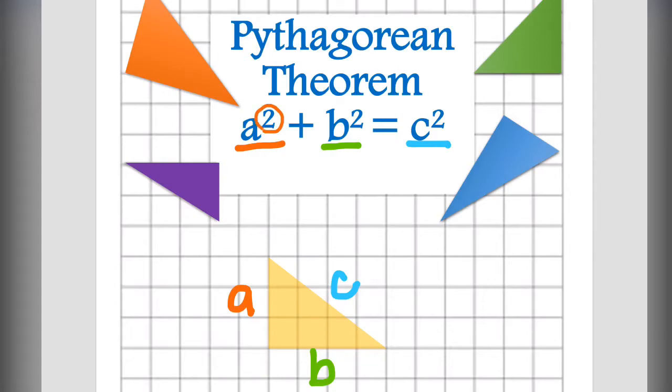Now, when we actually look at the squared part, or the exponent, we're going to take A, side A in this case, and turn it into a square.